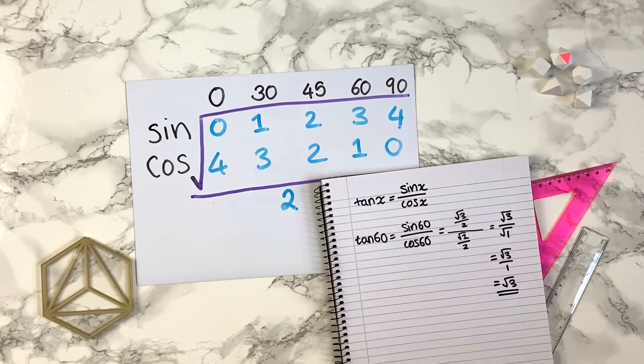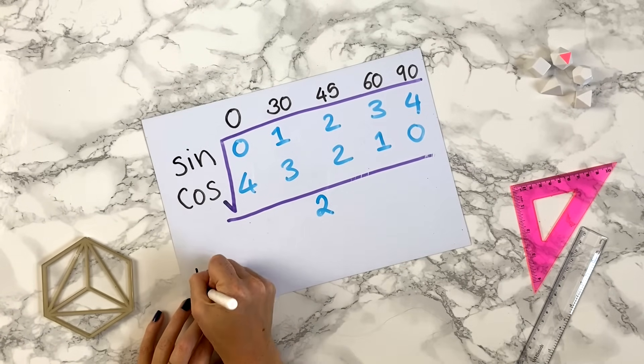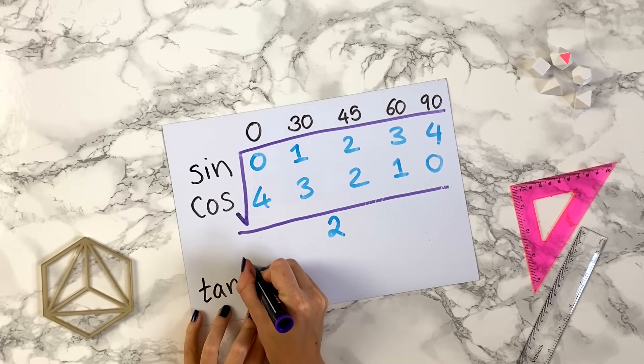Root 1 is just 1, so you get root 3 divided by 1, which is just root 3. So this can also help you find the tan values. An alternative way to find tan values is you can add a section to your diagram.